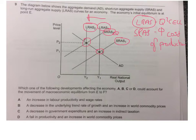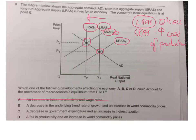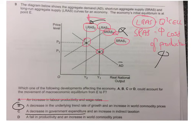We're looking for which of these options make sense. An increase in labour productivity and wage rates — if there was an increase in labour productivity, these lines would be going the other way, actually increasing. So we know that is wrong. A decrease in the underlying trend rate of growth — that makes sense because if the trend rate of growth is going down, that would account for the LRAS shift. And an increase in world commodity prices — if world commodity prices went up, firms' cost of production would increase, causing the SRAS shift. So we've got our two shifts and it's got to be that option. A decrease in government expenditure is wrong because that would shift AD.